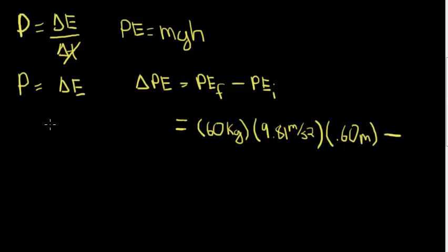And now we subtract this by the initial potential energy, which is also 60 kg times gravity at 9.81 meters per second squared, but this time we are at 0 meters in height since we are at ground level. Now that we see that the 0 meters will cancel out the initial potential energy, so therefore our answer we can just calculate using the final potential energy.